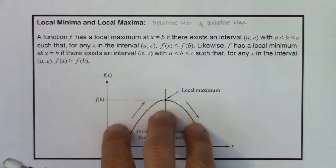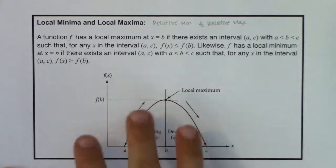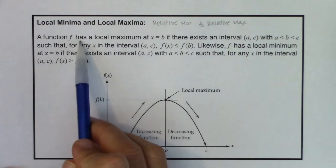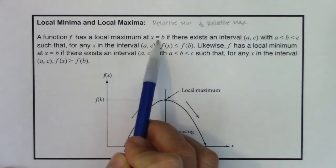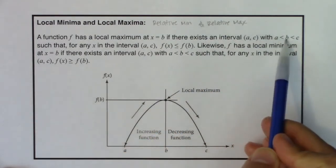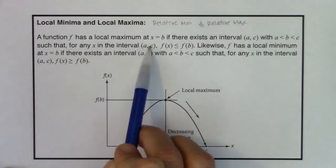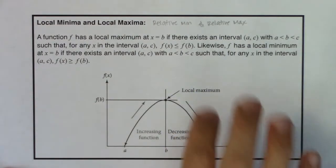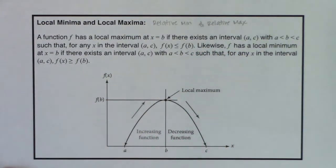This is much like the increasing/decreasing intervals definition — it looks convoluted, but we're going to stare it down and make sense of the notation. A function f has a local maximum at x equals b if there exists an open interval a to c, where b is between a and c, such that for any x in that interval, f of x is less than or equal to f of b. I'll pause here and come back to the minimum definition in a moment.